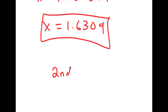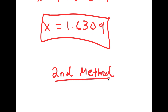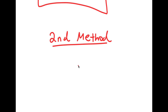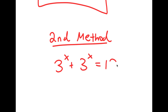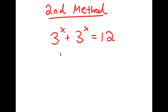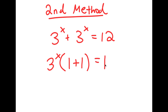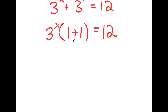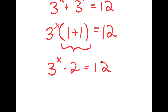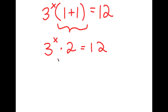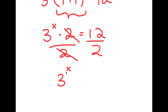Now, I actually have a second method of solving this problem. My equation was 3 to the power of x plus 3 to the power of x is equal to 12. And I'm going to start like I started with the first method by factoring out 3 to the power of x from my left-hand side. So I get 3 to the power of x times 1 plus 1 is equal to 12. Again, 1 plus 1 is 2, so I get 3 to the power of x times 2 is equal to 12. And again, I'm going to divide both sides by 2, so I get 3 to the power of x is equal to 6.